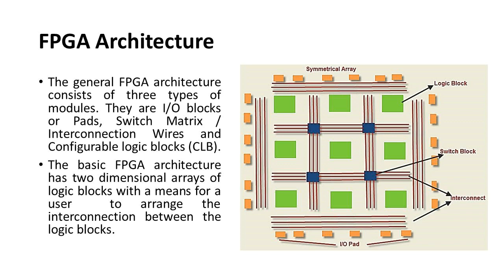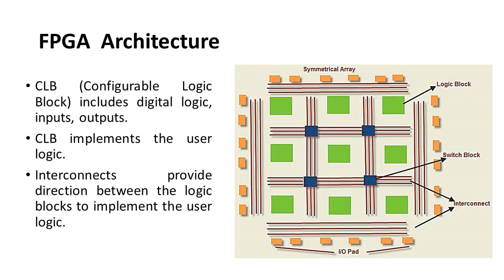The basic FPGA architecture has two-dimensional arrays of logic blocks with a means for a user to arrange the interconnection between the logic blocks. The configurable logic block (CLB) includes digital logic inputs and outputs, and it implements the user logic. Interconnects provide direction between the logic blocks to implement the user logic.